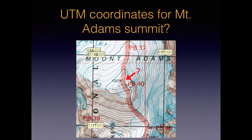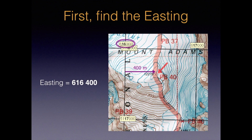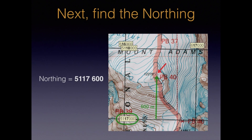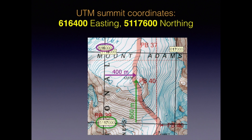Let's try this again with a real map. What are the coordinates for the summit of Mount Adams? First, look to the left of the summit and find the closest easting line, then estimate the distance from that line to the summit to the nearest 100 meters — here it's about 400. For the northing, let's call that about 600. So that gives us the estimated position for the summit, accurate to about plus or minus 100 meters.